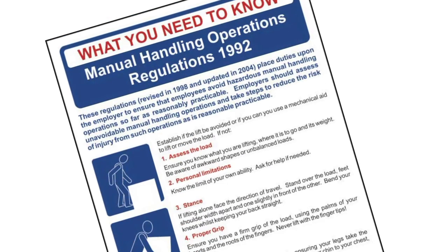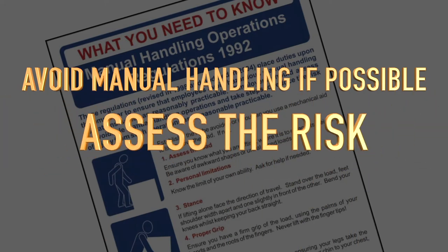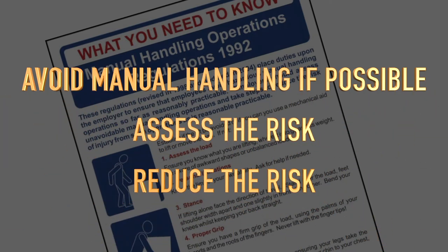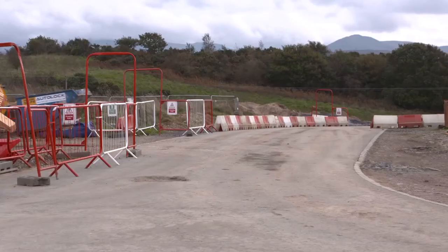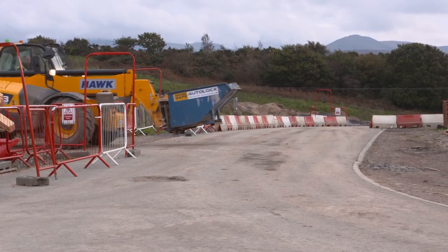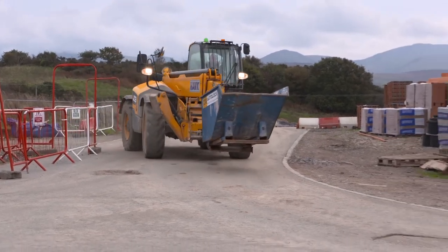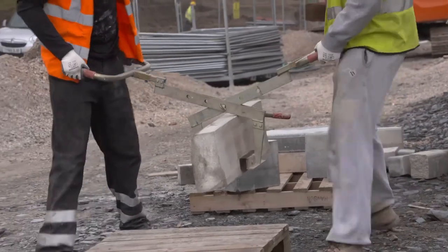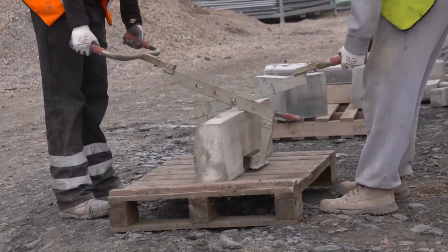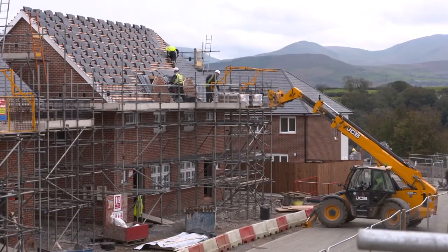We must approach any manual handling the same way as laid down in the Manual Handling Operations Regulations 1992. First, we must try to avoid the need for hazardous manual handling, so far as is reasonably practicable. So whenever possible, use mechanical means — that could be anything from a hand-held device to a telehandler, forklift truck or a crane.